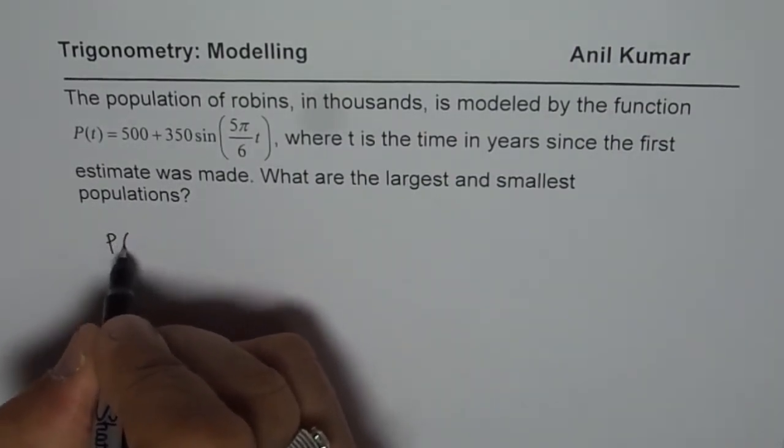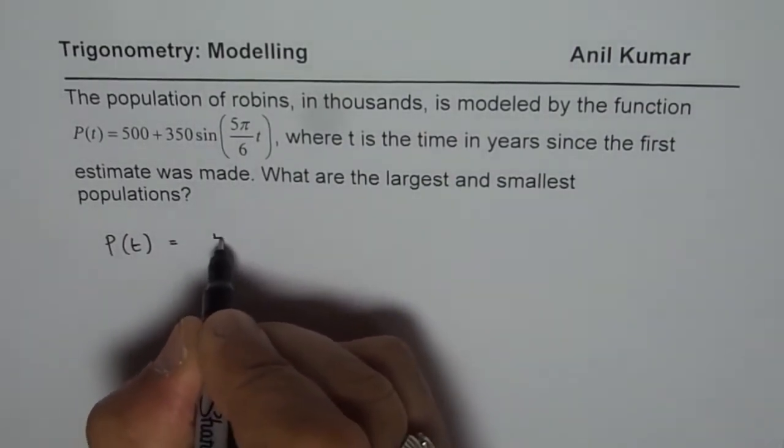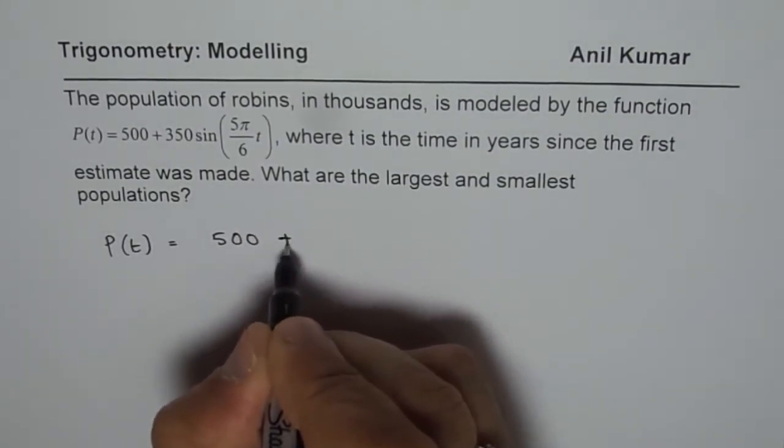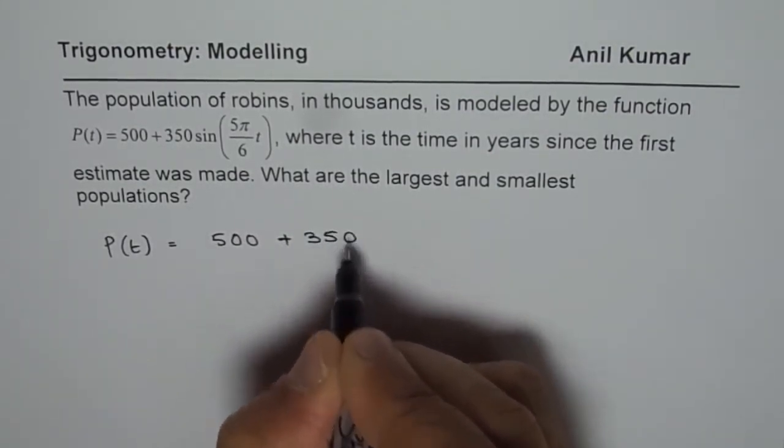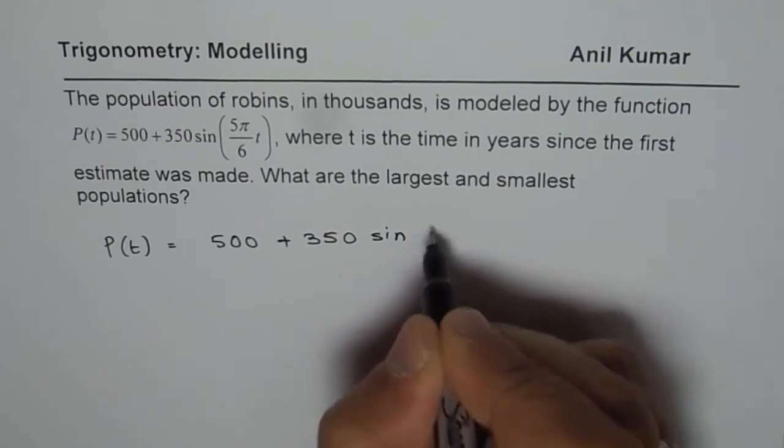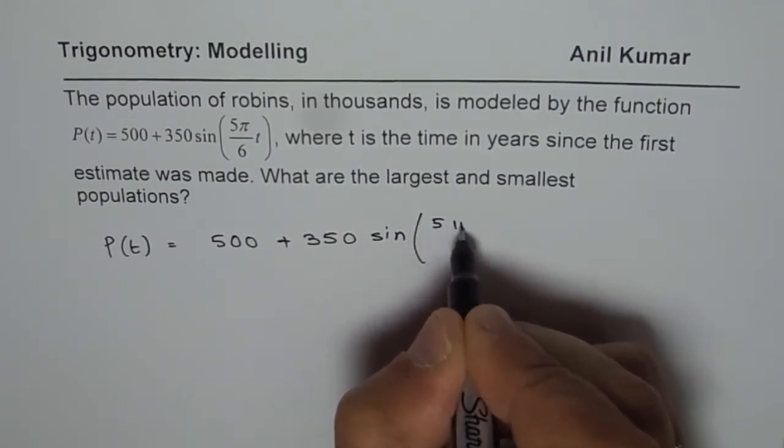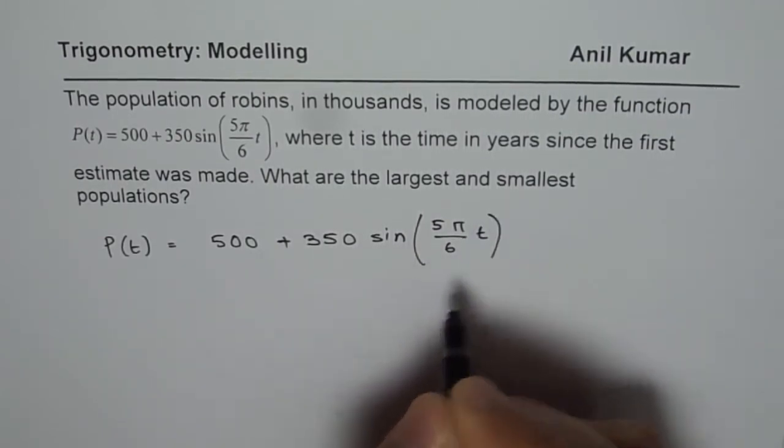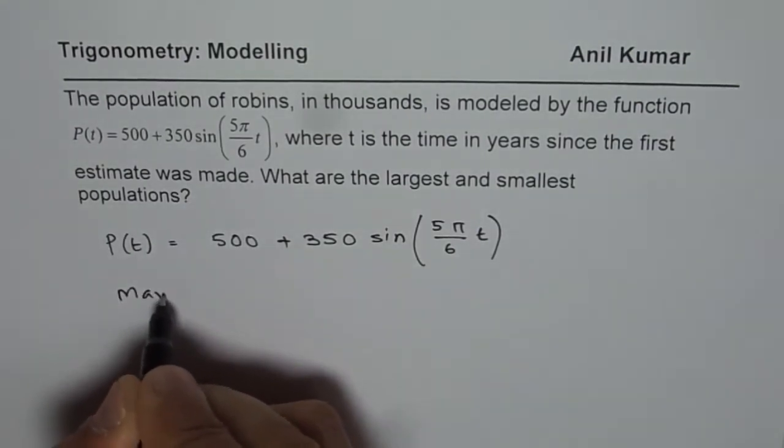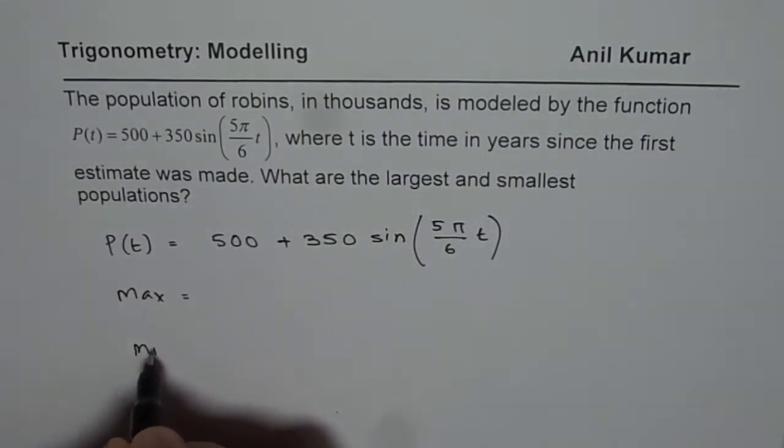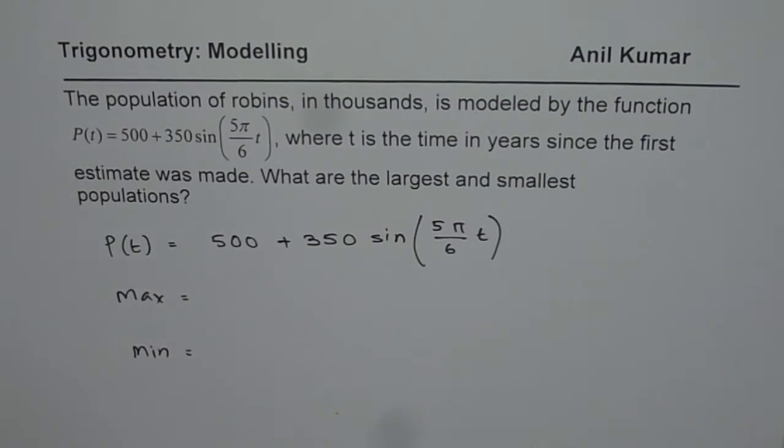The function given to us is P(t) = 500 + 350 sin(5π/6 t). You need to find maximum and minimum. How will you find it? You can pause the video and answer the question.